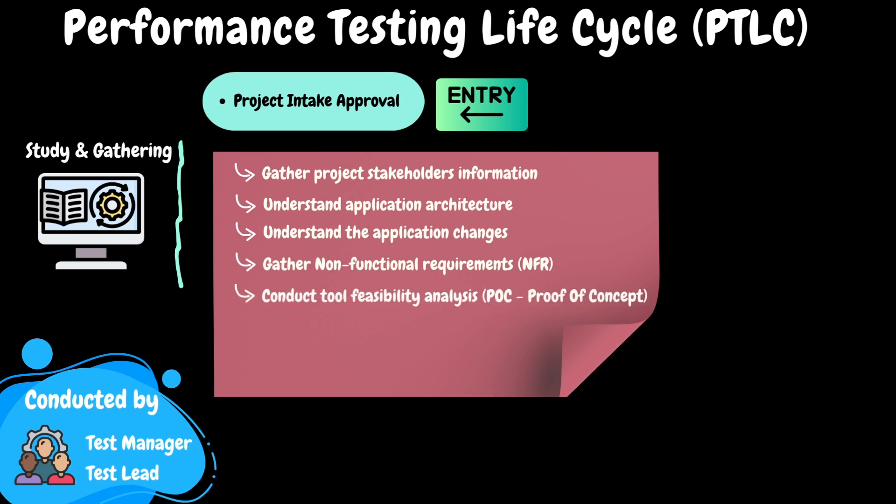When conducting performance testing for the first time, it is essential to conduct a tool feasibility analysis, often referred to as proof of concept (POC). This process allows us to determine the suitability of the chosen tool for testing this application. If performance testing has previously been conducted for this application, then there may be no need to re-evaluate tool feasibility and this step can be skipped.